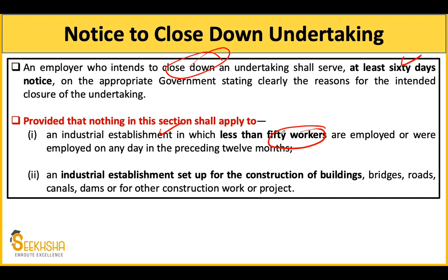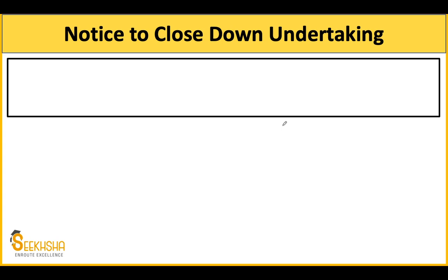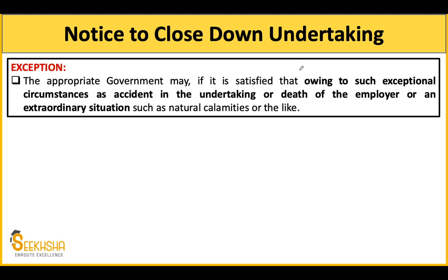This provision for closure notice does not apply if fewer than 50 people are employed. It also does not apply to industrial establishments engaged in construction work — road, canal, dam, or similar construction projects. However, the appropriate government may, if satisfied that owing to exceptional circumstances such as an accident in the undertaking, death of the employer, or an extraordinary situation like a natural calamity, waive the notice or compensation requirement.